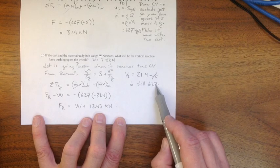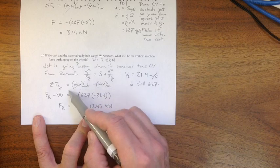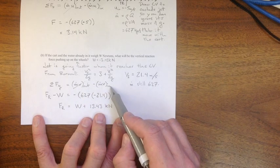M dot, still 627. Sum of the forces in the y direction. Again, nothing's going out. We've got negative M dot V in.